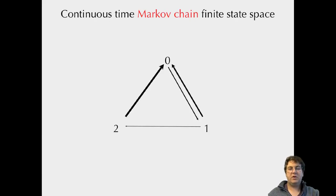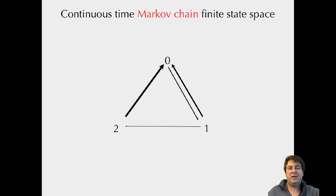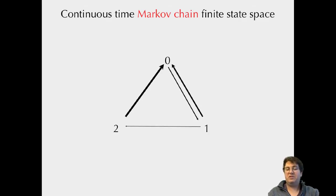An example of something that is Markovian is a state space where I can go from state 0 to state 1, from 1 to 2, and from 2 to 0. If I'm at state 0, I can only go one direction — it doesn't matter how I got there. If I'm in state 1, I can go to 0 or 2. What happens next just depends on where I am, so it's Markovian.